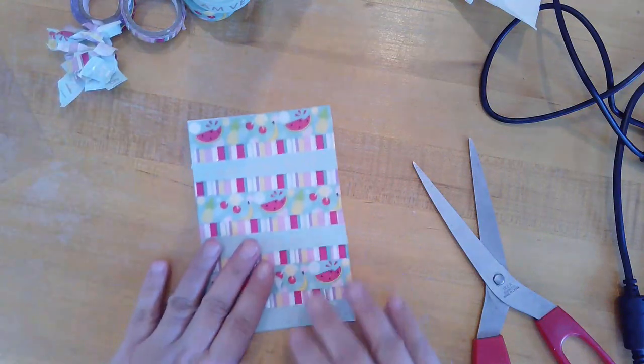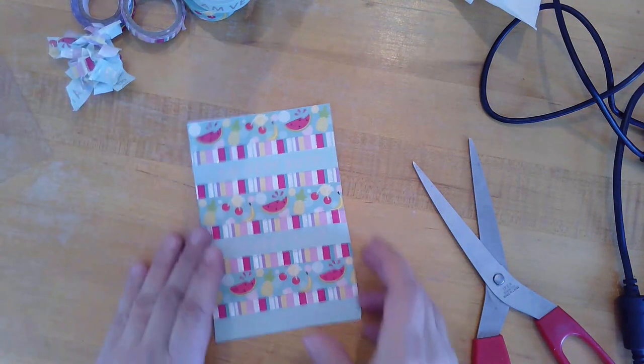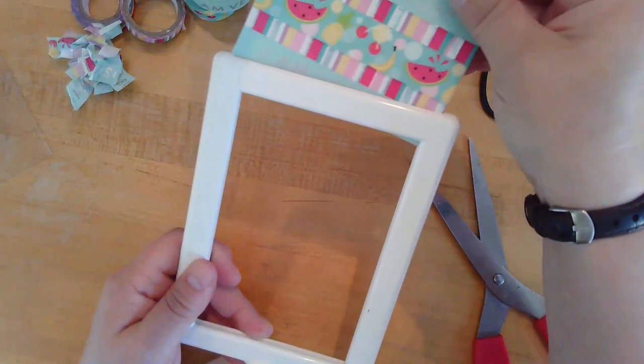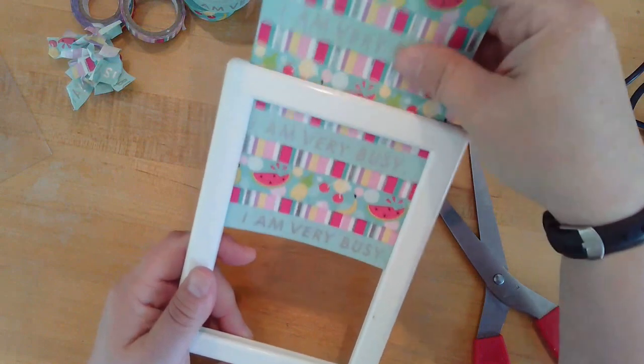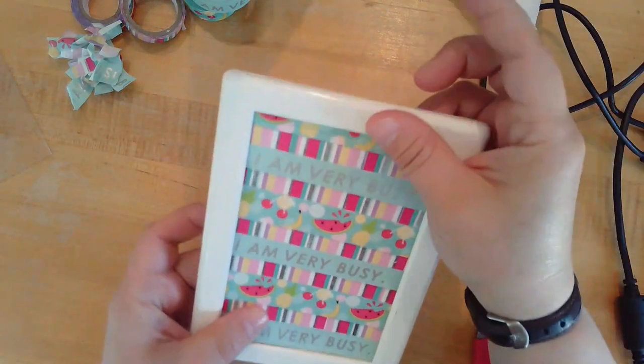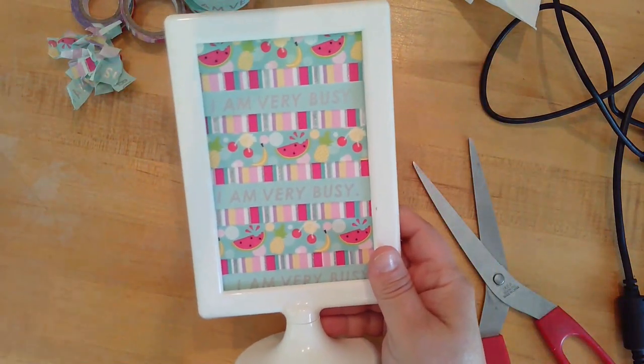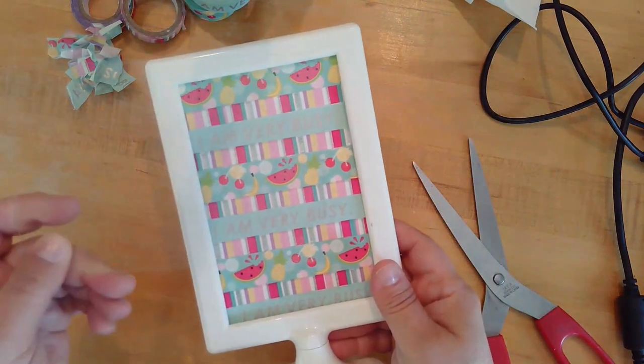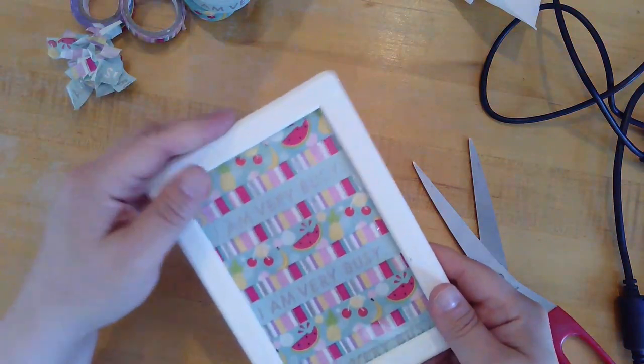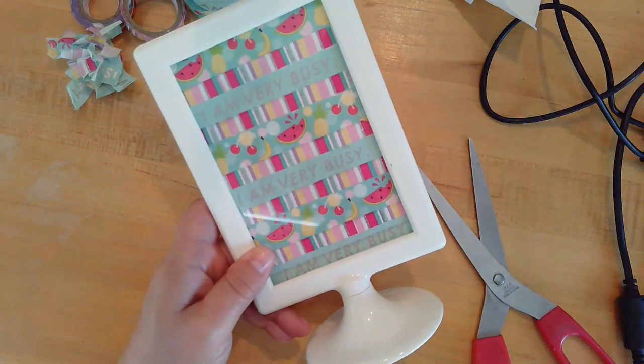Once you have your design set, you can assemble your whiteboard. First, you're going to slide your design into your picture frame. Make sure it goes all the way down to the bottom. Then, you'll get your clear plastic, and you're going to slot that in the top. Making sure that that's in front, because that's your writing surface.